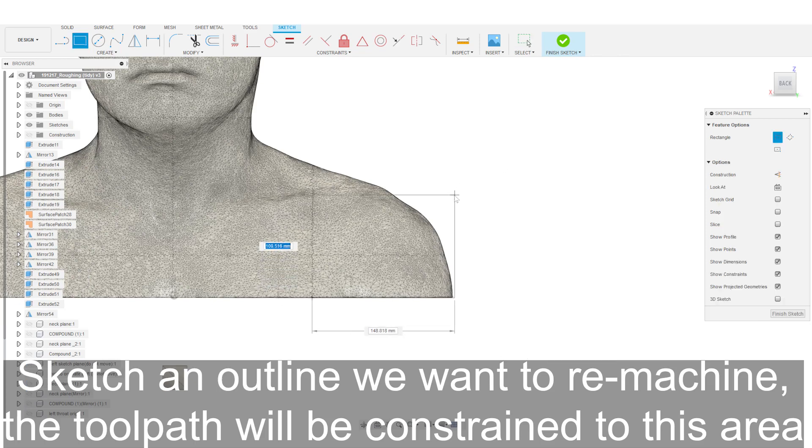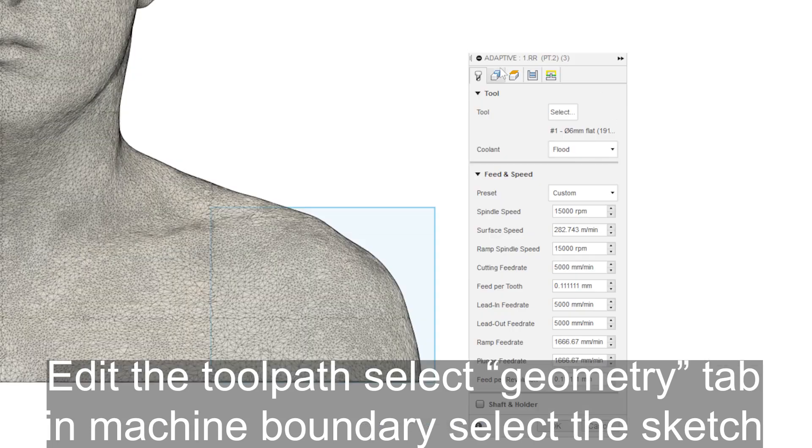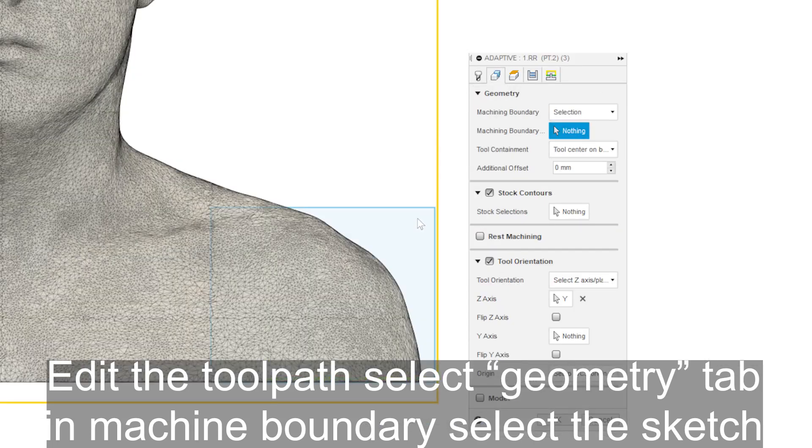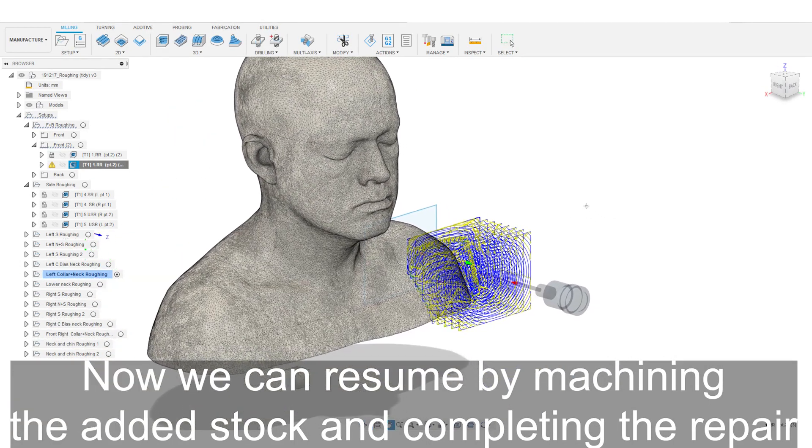This sketch outline will be used to constrain the tool path. Next, edit the tool path, then select the geometry tab. In the machine boundary, select the sketch and click OK to generate the tool path. Now we can resume machining the added stock and complete the repair.